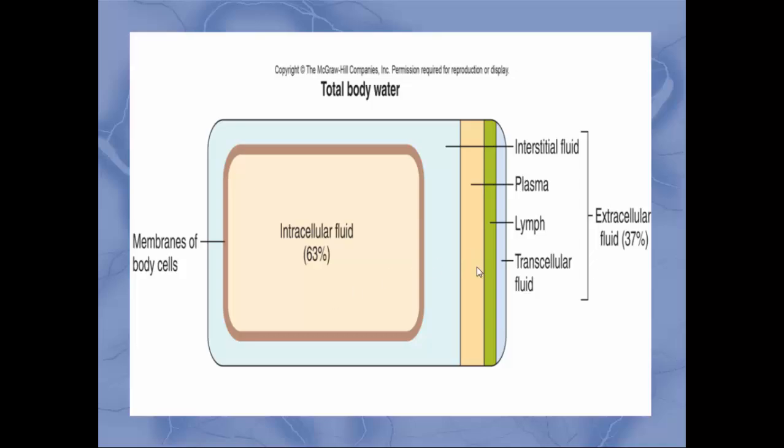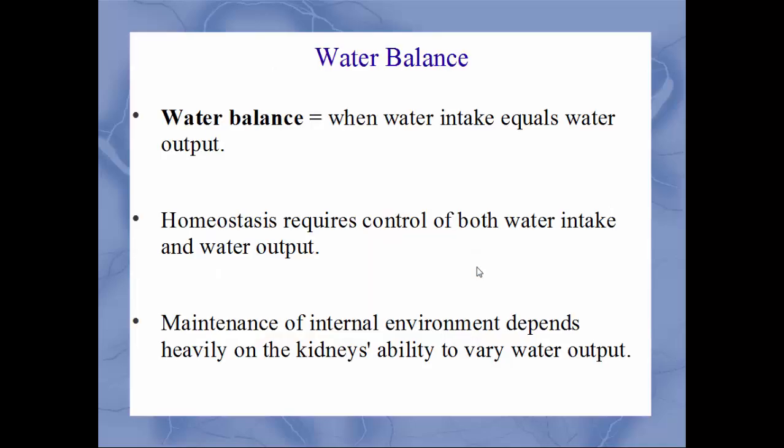Next we'll talk about water balance, which is when the amount of water taken in equals the amount going out — intake equals output. Homeostasis requires control of both; you don't want to take in too much or lose too much water. We rely heavily on the kidneys' ability to vary water output — sometimes you need to excrete more, sometimes you need to retain fluid. The kidneys are the main organ involved.